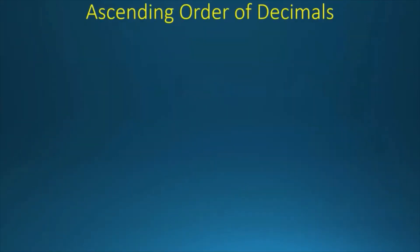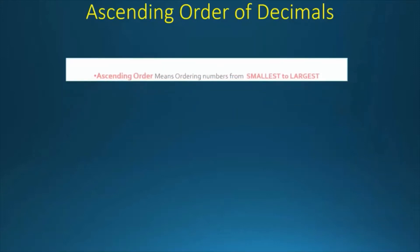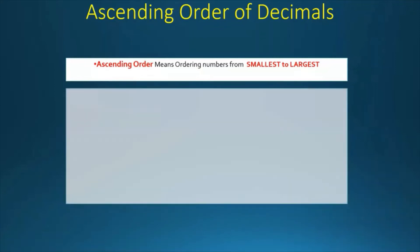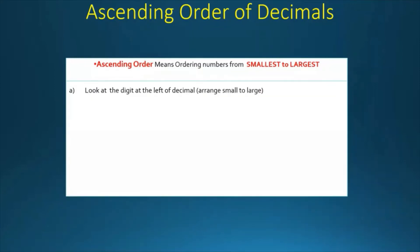Now, let's learn about the ascending order of decimals. The ascending order means ordering numbers from smallest to largest. How do we do that? The first step is to look at the digit to the left of the decimal, arrange small to large, then tenths place, again small to large, and then hundredths place, small to large, and so on.